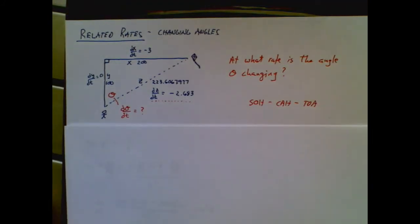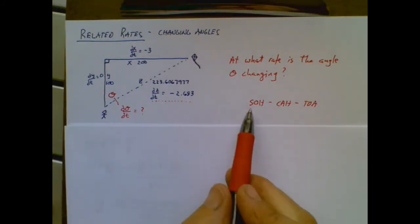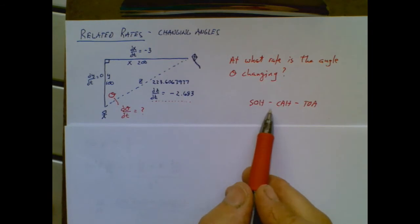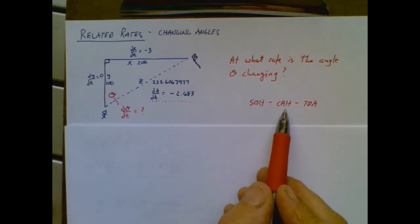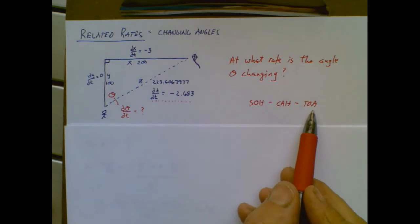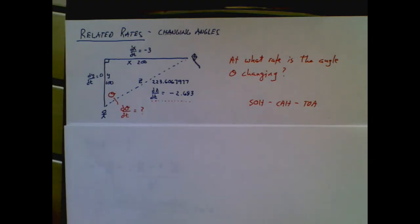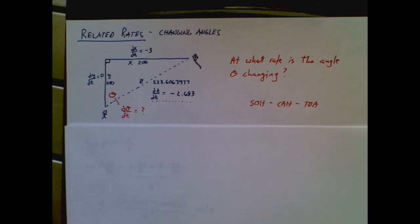which was when you were learning trigonometry related to triangles? Sine is opposite over hypotenuse. Cosine is adjacent over hypotenuse. Tangent is opposite over adjacent. Well, that's a good thing, because now we can unveil a trig equation that relates to this scenario.